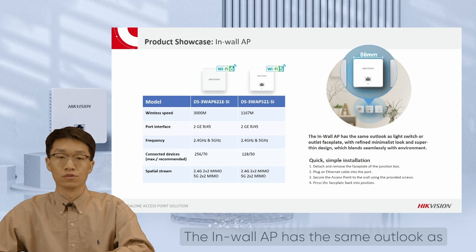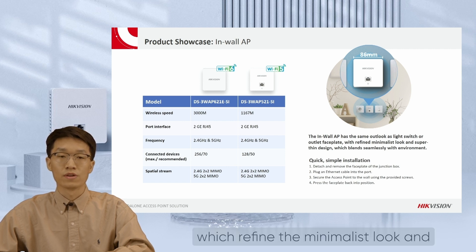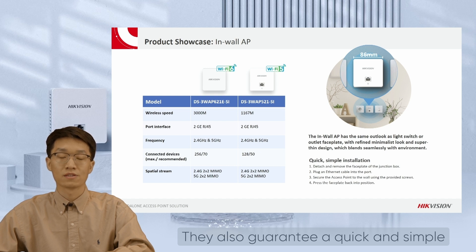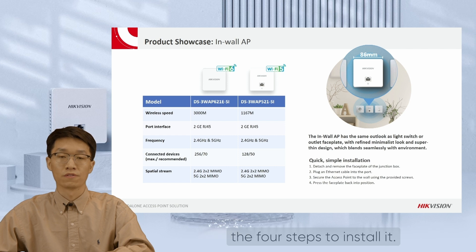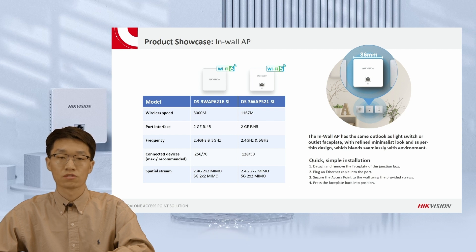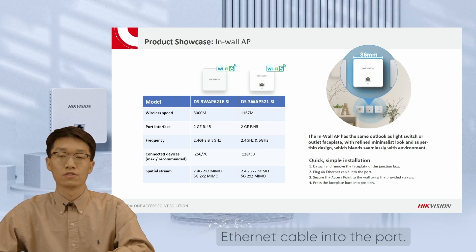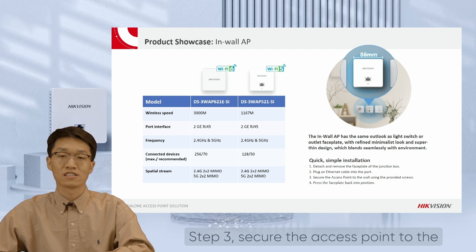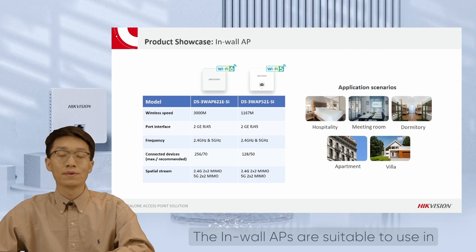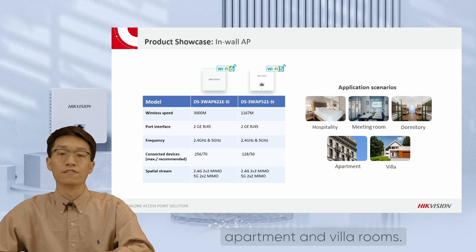In-wall APs with Wi-Fi 6 can provide up to 3000 Mbps wireless speed, and all in-wall APs support dual frequency band and 2x2 MIMO technology. The in-wall AP has the same appearance as a light switch or outlet faceplate, with a refined minimalist look and super thin design that blends seamlessly with the environment. Installation is quick and simple — just four steps: Step 1, detach and remove the faceplate of the junction box; Step 2, plug an Ethernet cable into the port; Step 3, secure the access point to the wall using the provided screws; Step 4, press the faceplate back into position. In-wall APs are suitable for use in hospitality, meeting rooms, dormitories, apartments, and villa rooms.